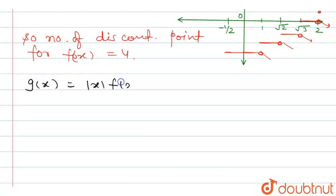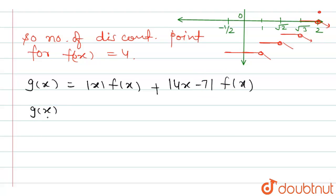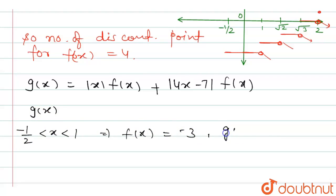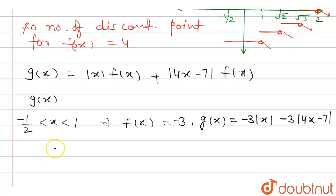g(x) = |x|·f(x) + |4x-7|·f(x). We now write g(x) piecewise using the values of f(x) on each interval. When x ∈ [-1/2, 1), f(x) = -3, so g(x) = -3|x| - 3|4x-7|. When x ∈ [1, √2), f(x) = -2, so g(x) = -2|x| - 2|4x-7|.